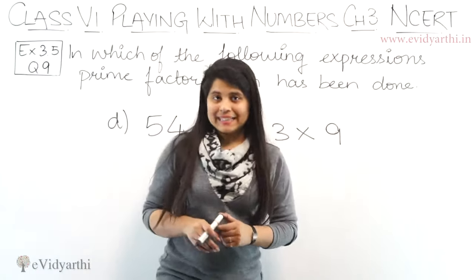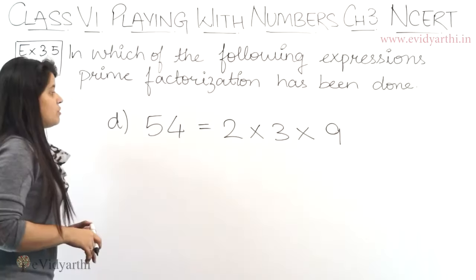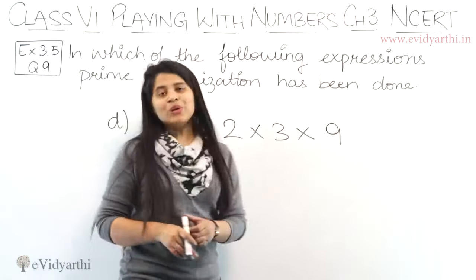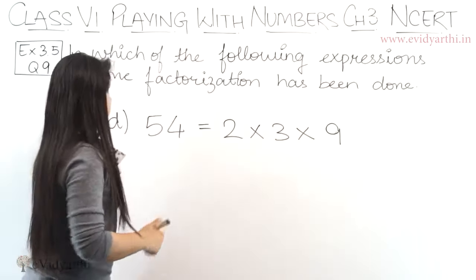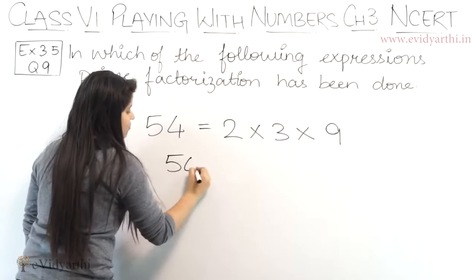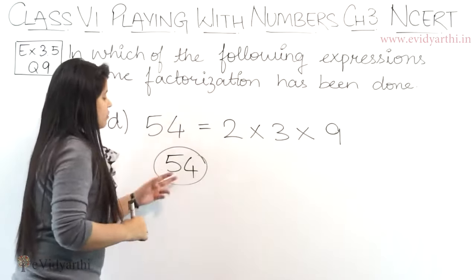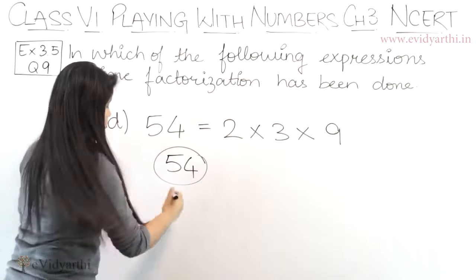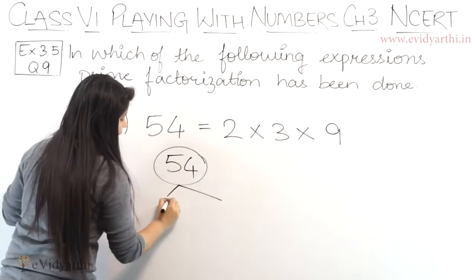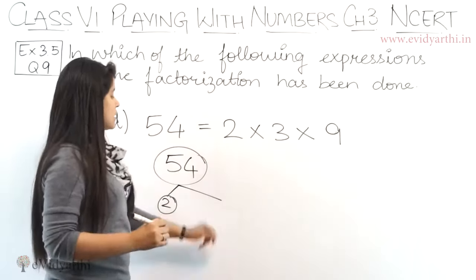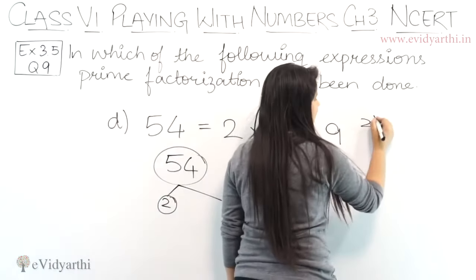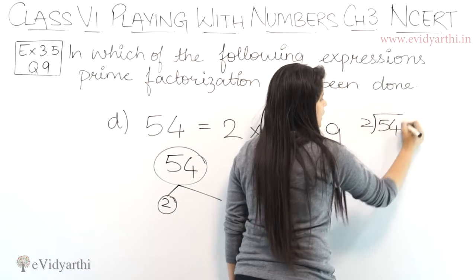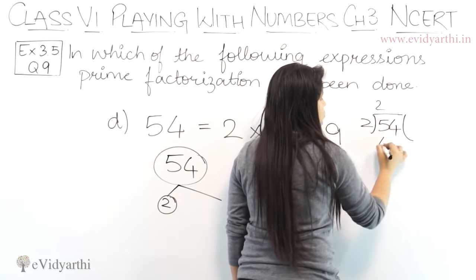Now coming to the D part. D part we have 54 equals to 2 into 3 into 9. So first we have to prime factorize 54 and check. 54 is divisible by 2. So we can expand it as 2. When will it be divisible by 2? We can divide and check. 2 goes into 54. 2 times 2 is 4. This will be 41.